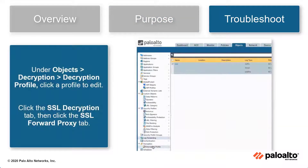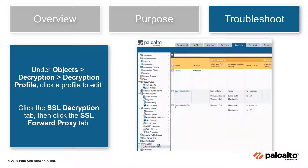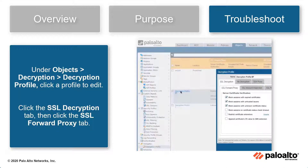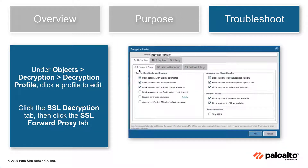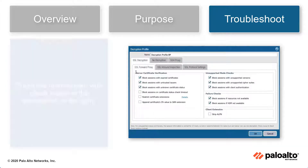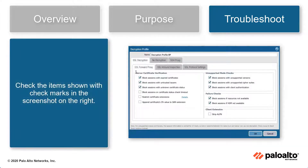Under Objects, Decryption, Decryption Profile, click a profile to edit. Click the SSL Decryption tab, then click the SSL Forward Proxy tab.